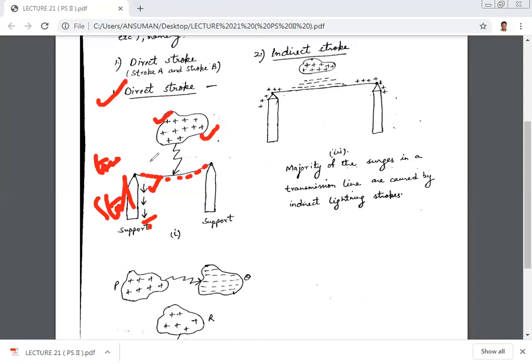When a cloud passes a tall object, it will induce the opposite polarity charge on the transmission line. The excessive current due to the charge induced will flow over the insulator by the tower to the ground.